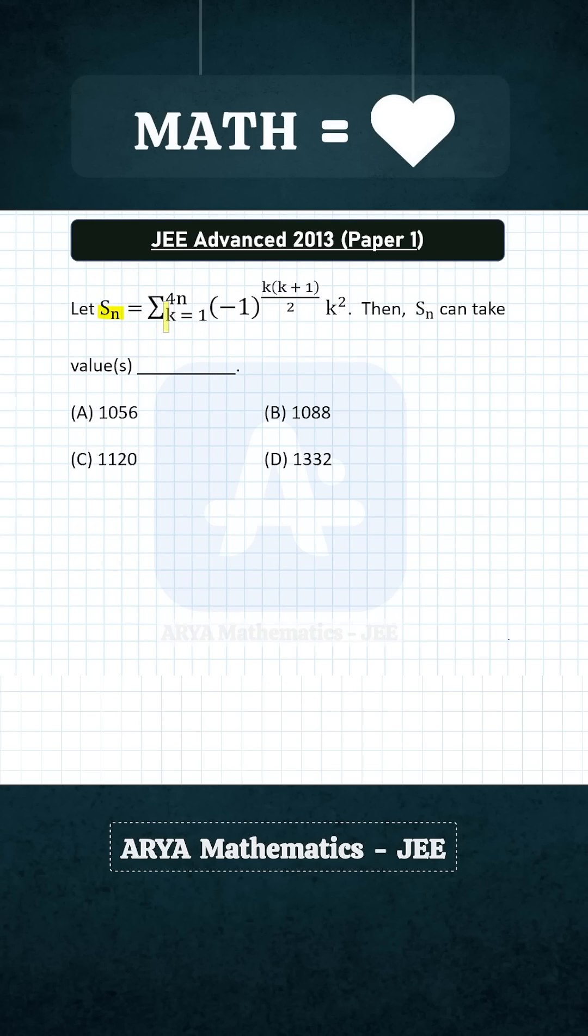Let Sn be this sum, sum from k equals 1 to 4n of (-1) raised to k(k+1)/2 multiplied by k². Then what are the different values that Sn can take?